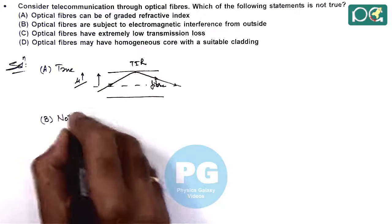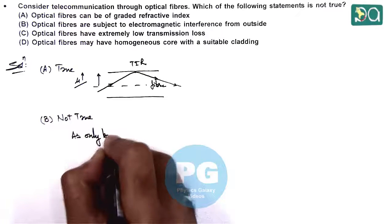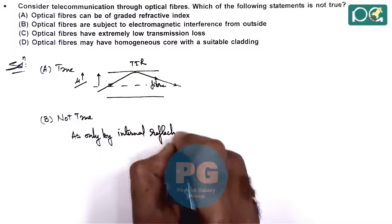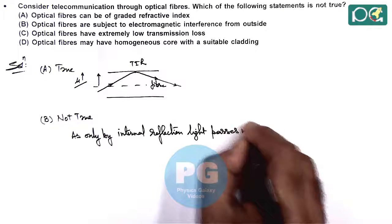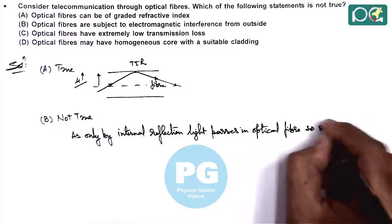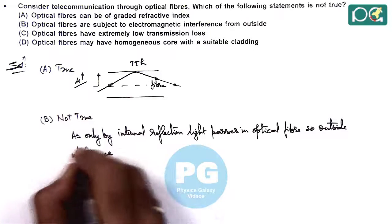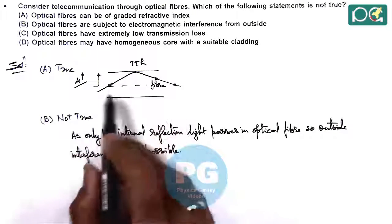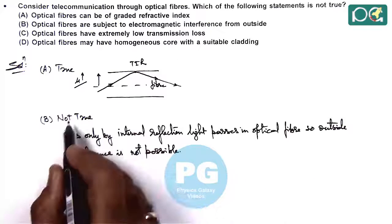So we can write it is not true because here we can say as only by internal reflection light passes in optical fiber. So outside interference in optical fiber is not possible. So inside optical fiber only internal reflection allows light to pass through the fibers. So outside interference is not possible. B is not true.